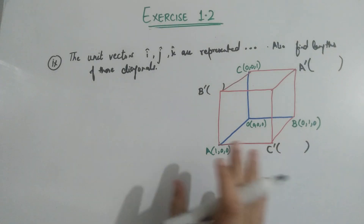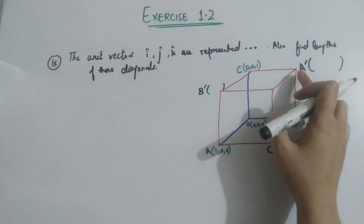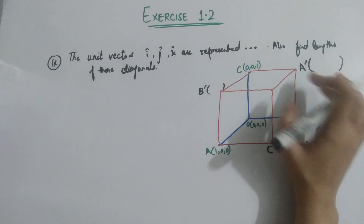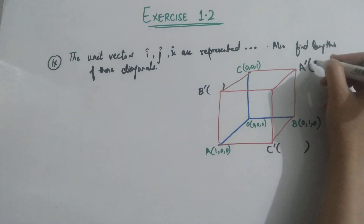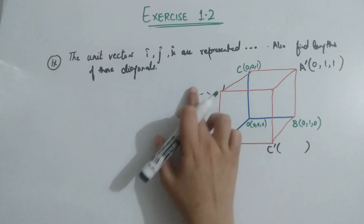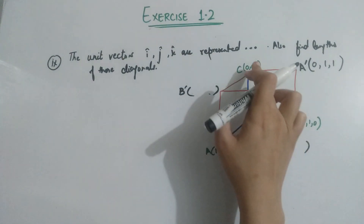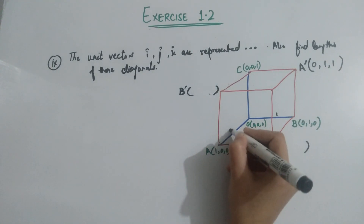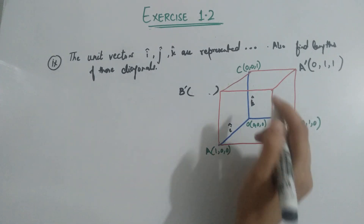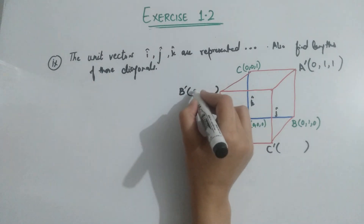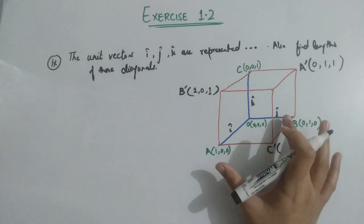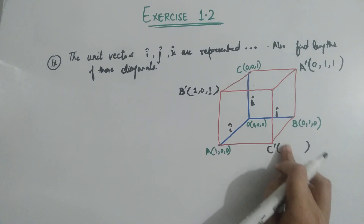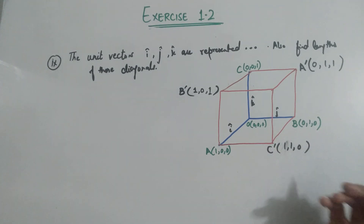A is opposite to A-prime, which is the diagonal on the opposite side. A-prime lies in the y-z plane. Similarly B-prime lies in the x-z plane. C-prime lies in the x-y plane. These are the vertices we have identified. Now let's find the diagonal vectors AA-prime, BB-prime, and CC-prime.